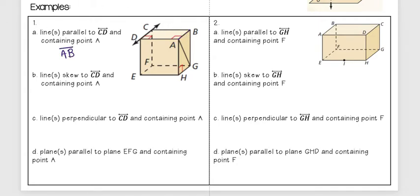Okay, now for the next one, find the lines or lines skew to CD and containing point A. So now for skew, I want to find that means that those lines aren't going to be on the same plane as CD. So that means AD and AB are out because they are on this same plane with CD.